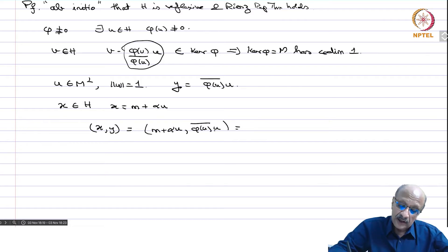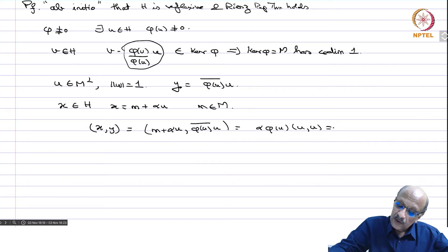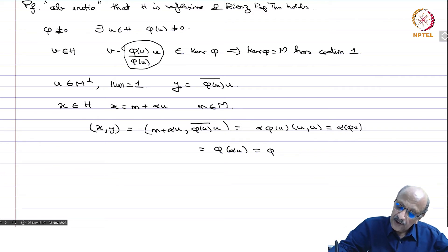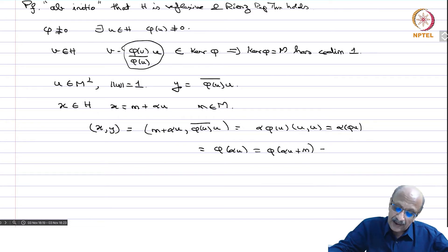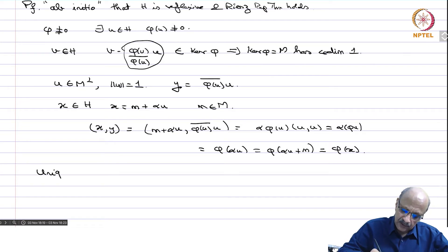This equals phi(alpha*u), which also equals phi(alpha*u + m) because m is in the kernel, and that is precisely phi(x). So there always exists a y such that phi(x) = inner product x,y. I should also address uniqueness, which holds in general.